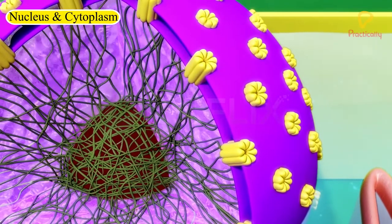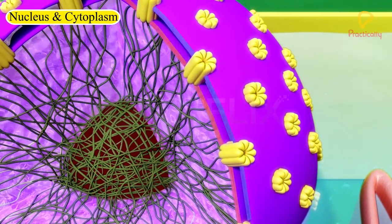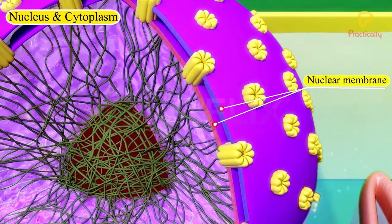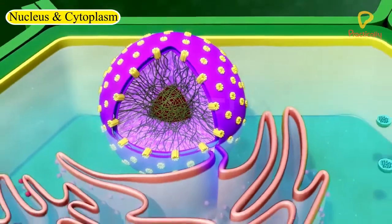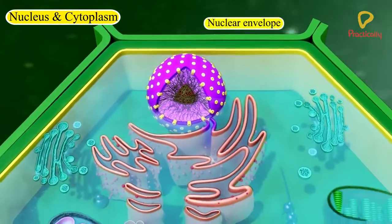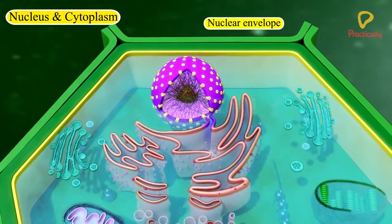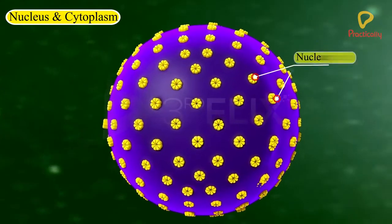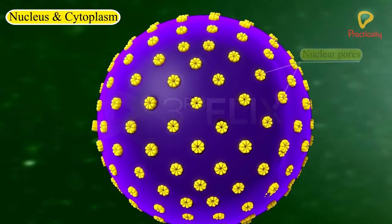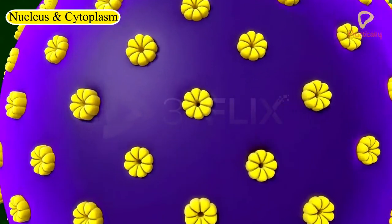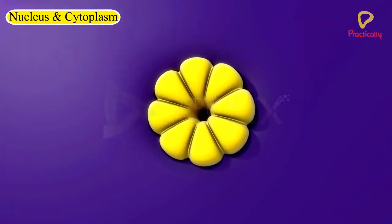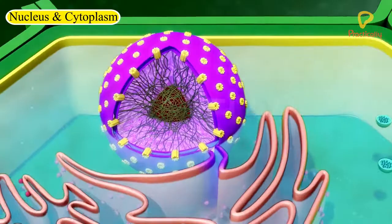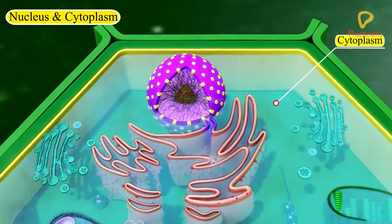The nucleus has a double-layered covering called nuclear membrane, also called nuclear envelope. The nuclear membrane has pores which allow the transfer of material from inside the nucleus to its outside, that is, to the cytoplasm.